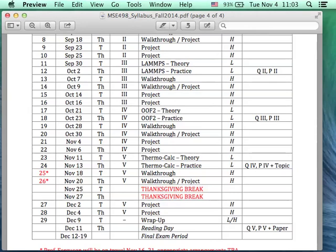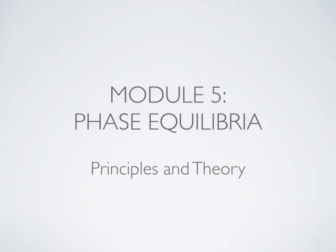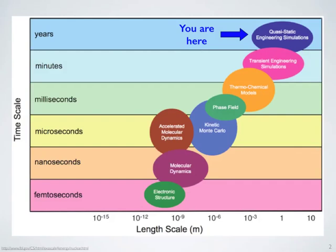Today we're going to start talking about phase equilibria. This is the final module, module five: phase equilibria. We did Bash and MATLAB, then Quantum Espresso worrying about electrons, then LAMMPS worrying about atoms and coarse-graining out the electrons, then finite element modeling for quasi-continuum type models. And now we're going all the way up to phase equilibria. We started at very short length and time scales — nanometers, picoseconds — moved up to molecular dynamics, then finite element models, and now we're at the very top at continuum length scales, order of meters or even longer, and time scales of minutes to years.